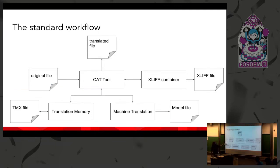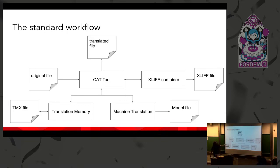The standard workflow: you come with an original file, put it into a CAT tool or server, which generates an XLIF container — the envelope of the original file. You then query the translation memory or machine translation and fill all the content in it. At any time you can export the container to an XLIF file and send it to an independent translator. You don't want to give the translator the original file, which may be proprietary. You can also split the load among ten translators with ten small parallel XLIF files. You can export a translation memory as TMX or a machine translation model file, and at any point repackage back the translated strings into a translated file to deliver to your customer.